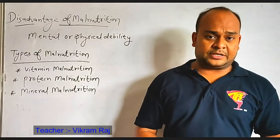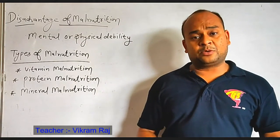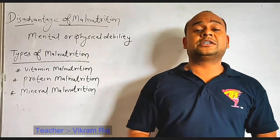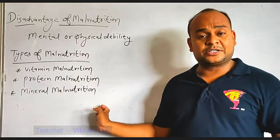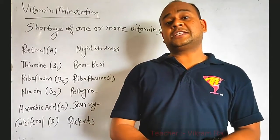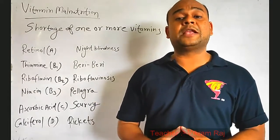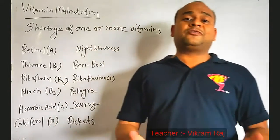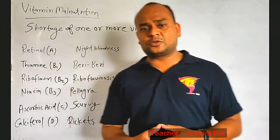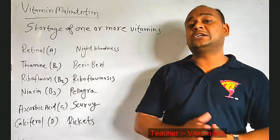Next topic: types of malnutrition. There are many types of malnutrition depending on which essential nutrient is deficient. However, our course covers only three types: vitamin malnutrition, protein malnutrition, and mineral malnutrition. The first type is vitamin malnutrition: shortage of one or more vitamins is termed as vitamin malnutrition.